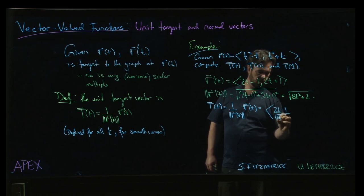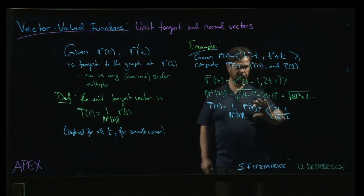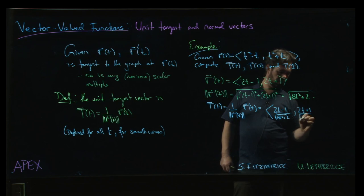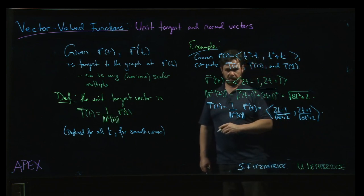And, of course, if you want to leave the 1 over the square root out front as a scalar multiple, you can certainly do that. But I'll bring it inside. Okay. So, there's our unit tangent.